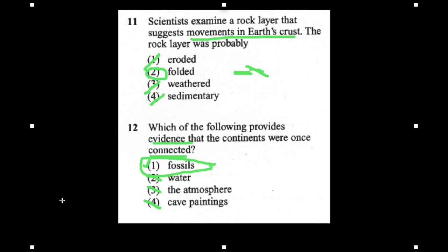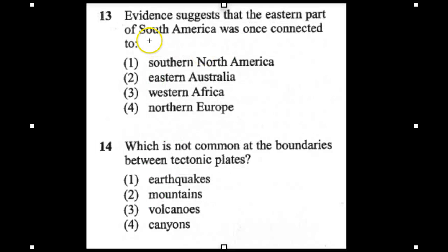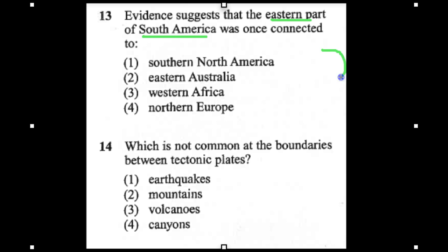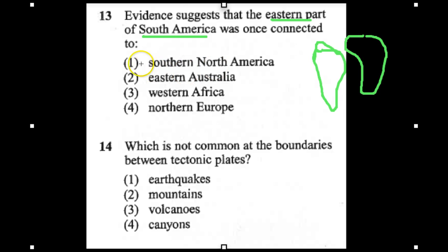Number 13: evidence suggests that the east part of South America was once connected to — North America, eastern Australia, western Africa, or northern Europe? If you think about it, South America's eastern coast fits with western Africa. East and west match up. So the answer is western Africa.